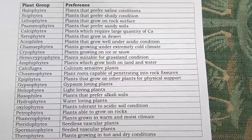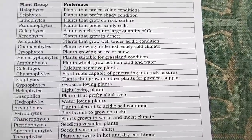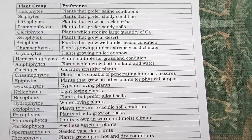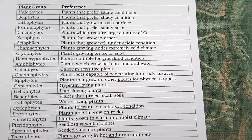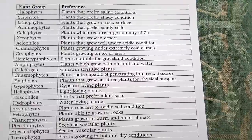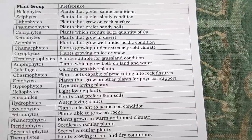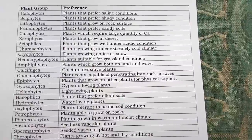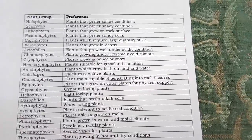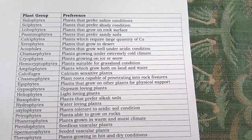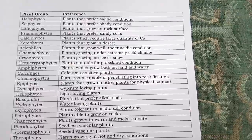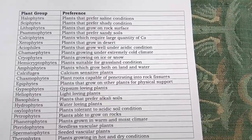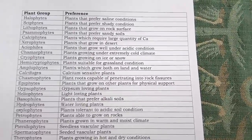Oxylophytes are plants tolerant to acidic soil conditions. Lithophytes are plants able to grow on rocks. Pteridophytes are seedless vascular plants. Phanerophytes are plants that grow in warm and moist climates. Spermatophytes are seed-bearing vascular plants. Xerophytes are plants growing in hot and dry conditions.